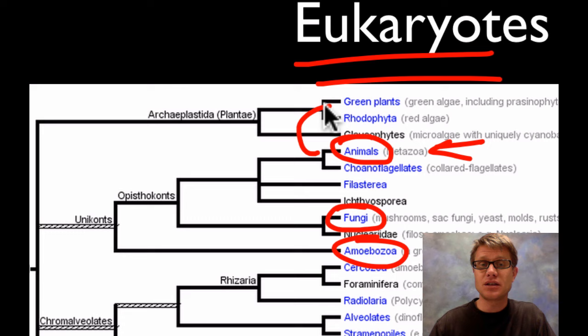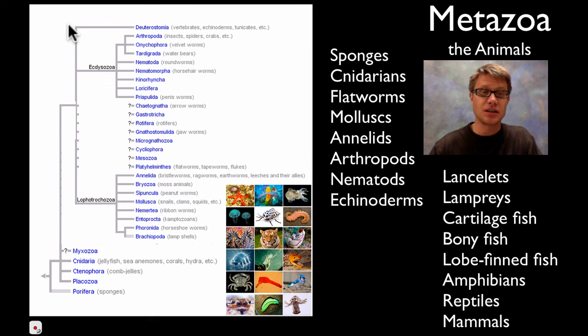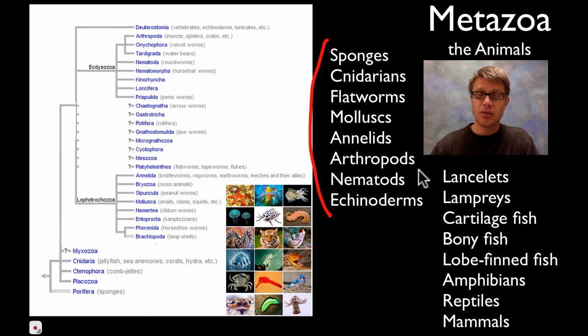If we look more in detail at the metazoans, this is our phylogenetic tree. It goes all the way from things like jellyfish down here up to spiders. So we have a lot of different types of animals. In my class we're going to learn these invertebrates and these vertebrates — things that have a spinal cord and things that don't.